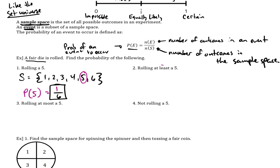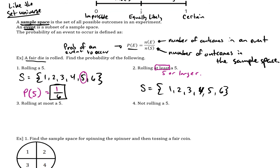The probability of rolling at least five — 'at least' means five is the least, so this is saying you can roll five or even larger. I'll draw the sample space again. Five or larger includes five and six, so there are two numbers circled out of the total six. So P equals two-sixths, which reduces to one-third. The probability of rolling at least a five is one out of three.